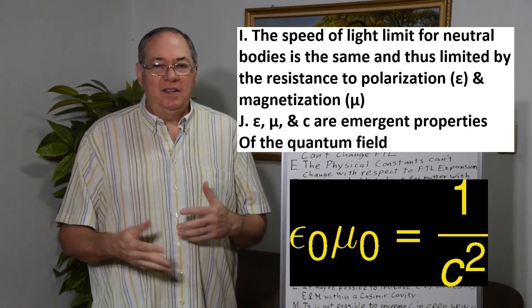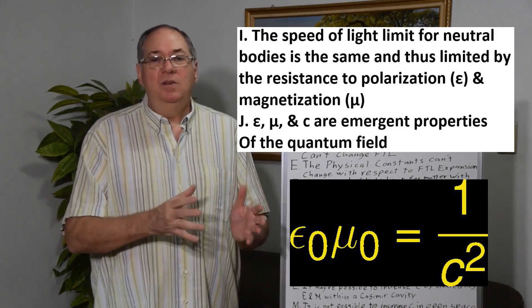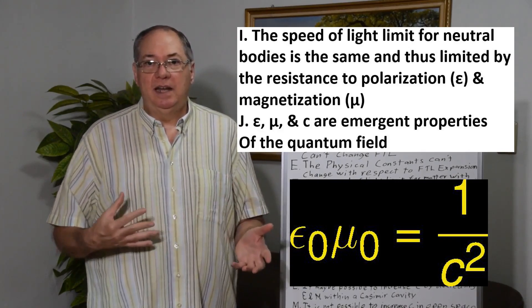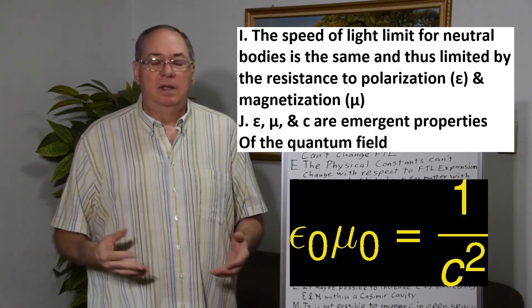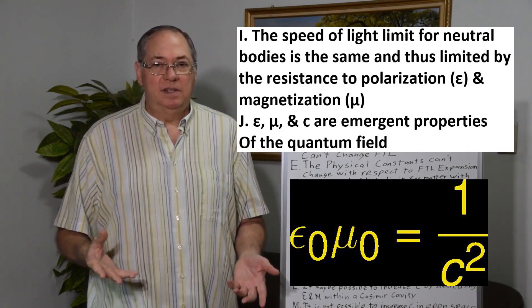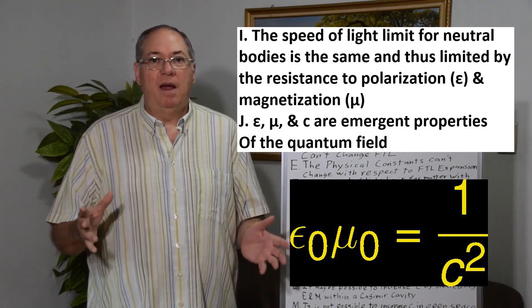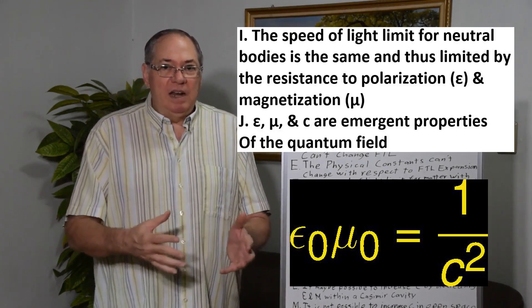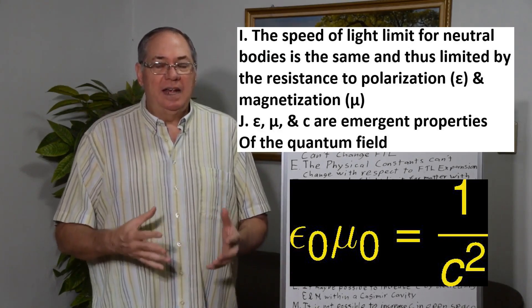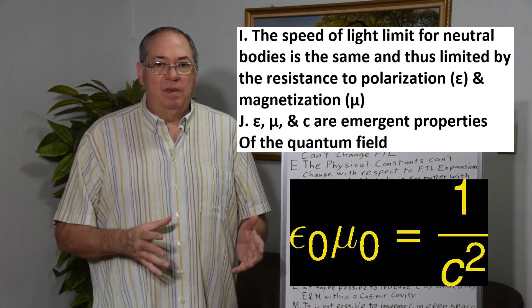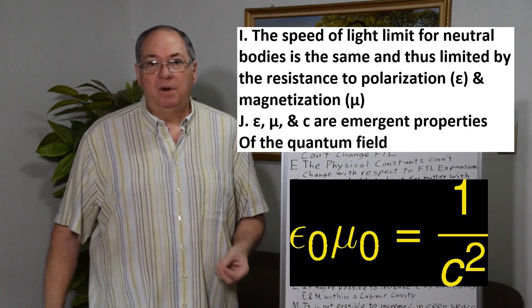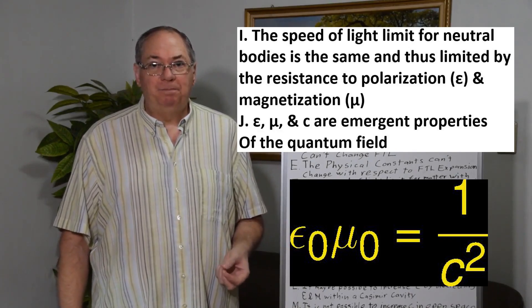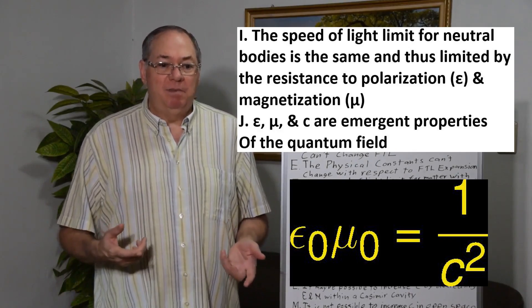Which is a necessary conclusion to reach in order to come up with an understanding of inertia, which is something else physicists ignore. They don't want to be bothered with trying to explain inertia, but it's right in front of us. Inertia has to be an interaction with the quantum field, or the speed of light limit for neutral matter wouldn't be the same, and the mass wouldn't be the same.